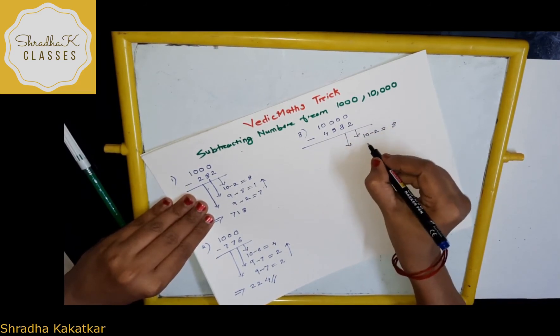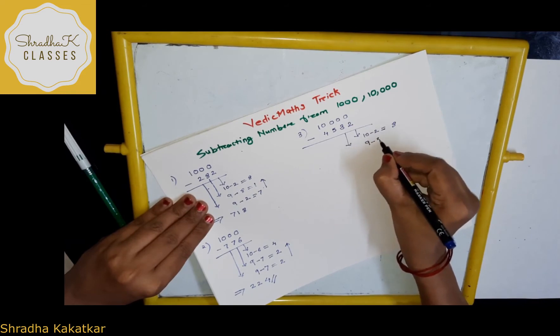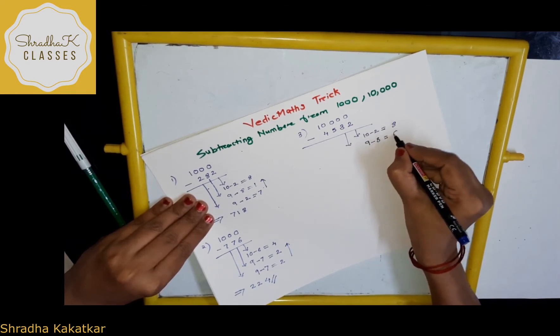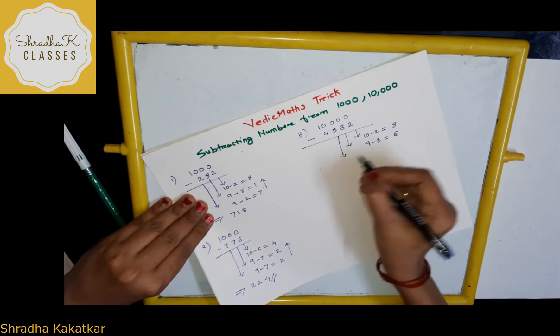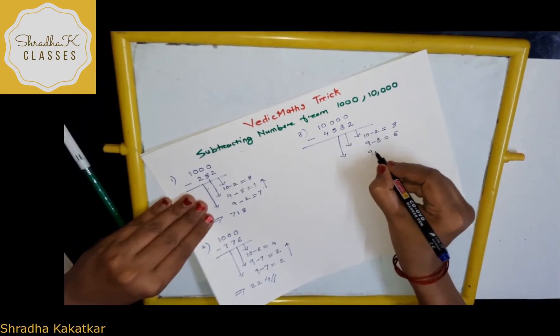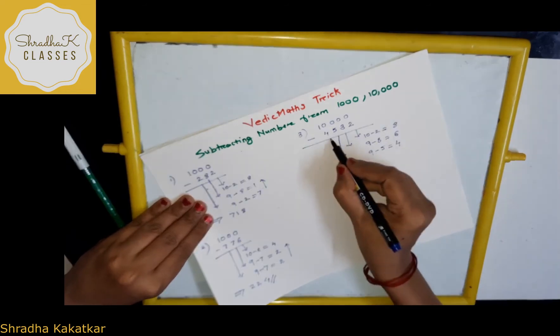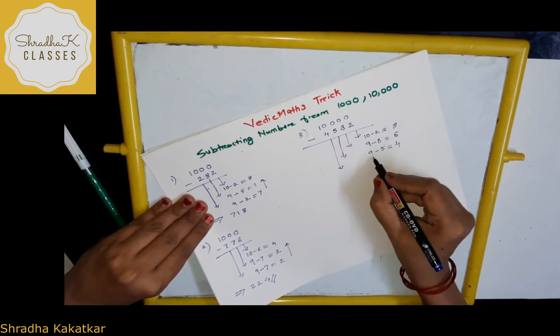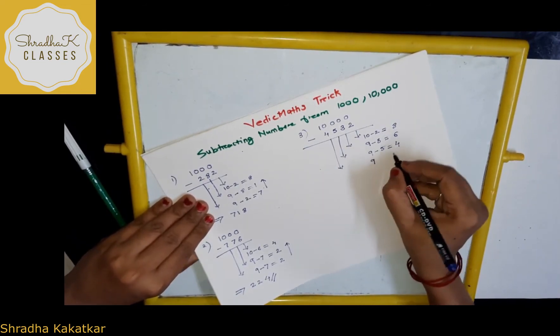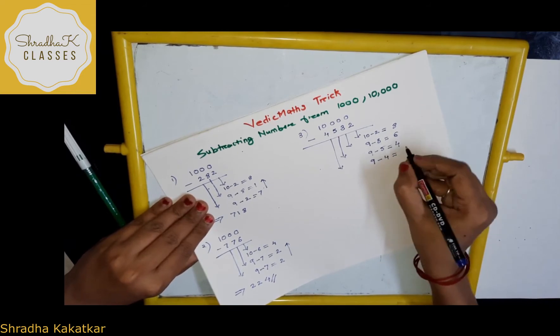Then, next, what I will do, which number? Yes, correct. 9 minus 3. 9 minus 3, 6. Again, next, which number? Correct. 9 again, 9 minus 5 is 4. Next, now tell me which number, what I will take? Again, 9, 9 minus 4, 5.